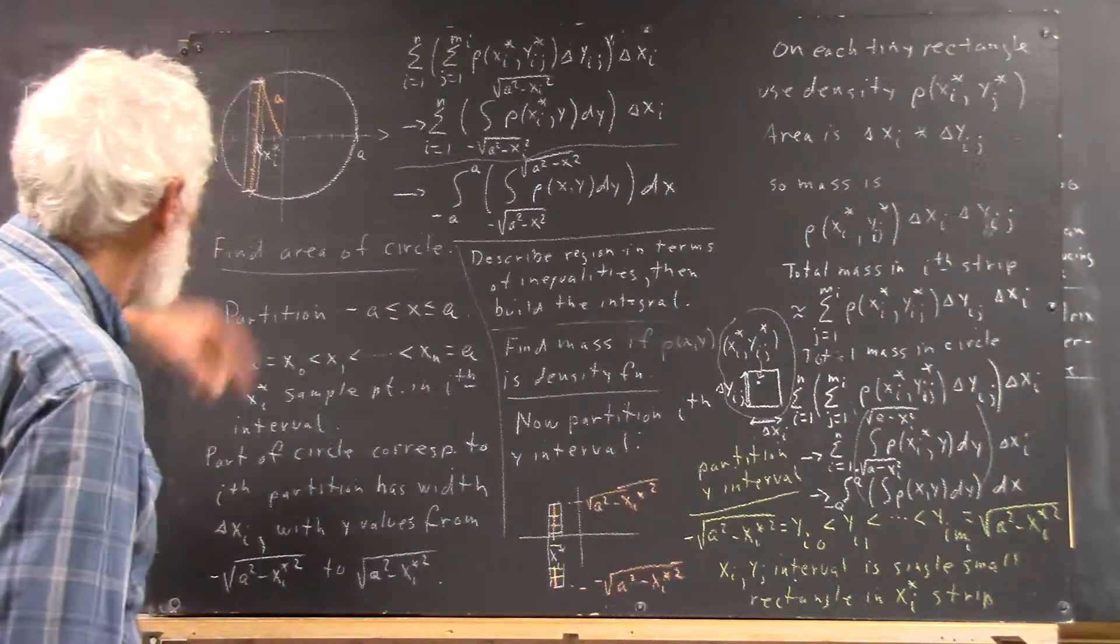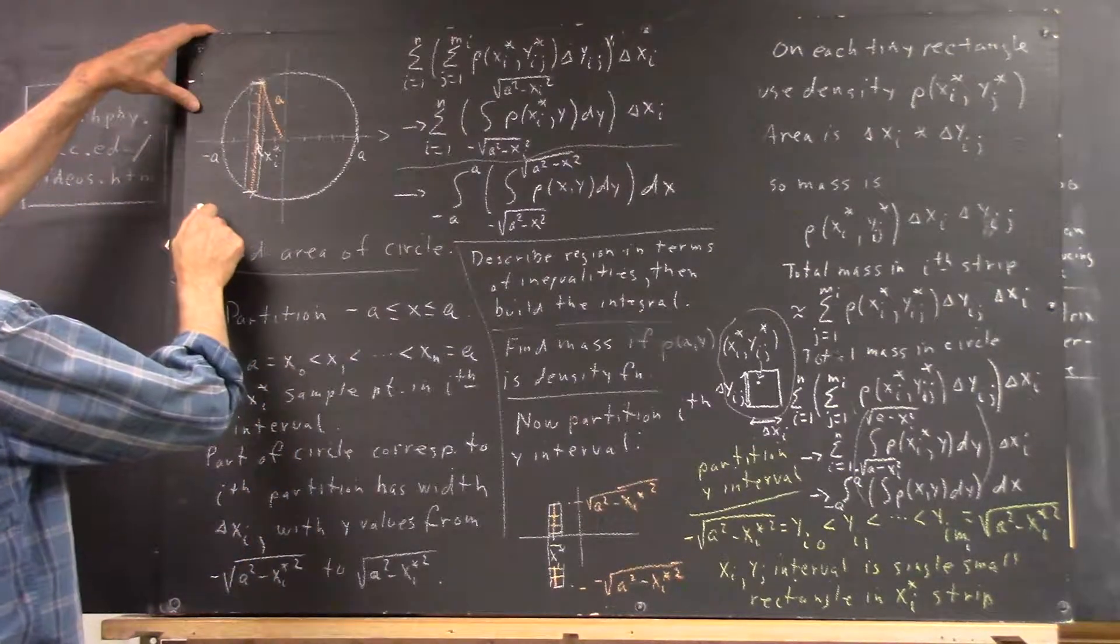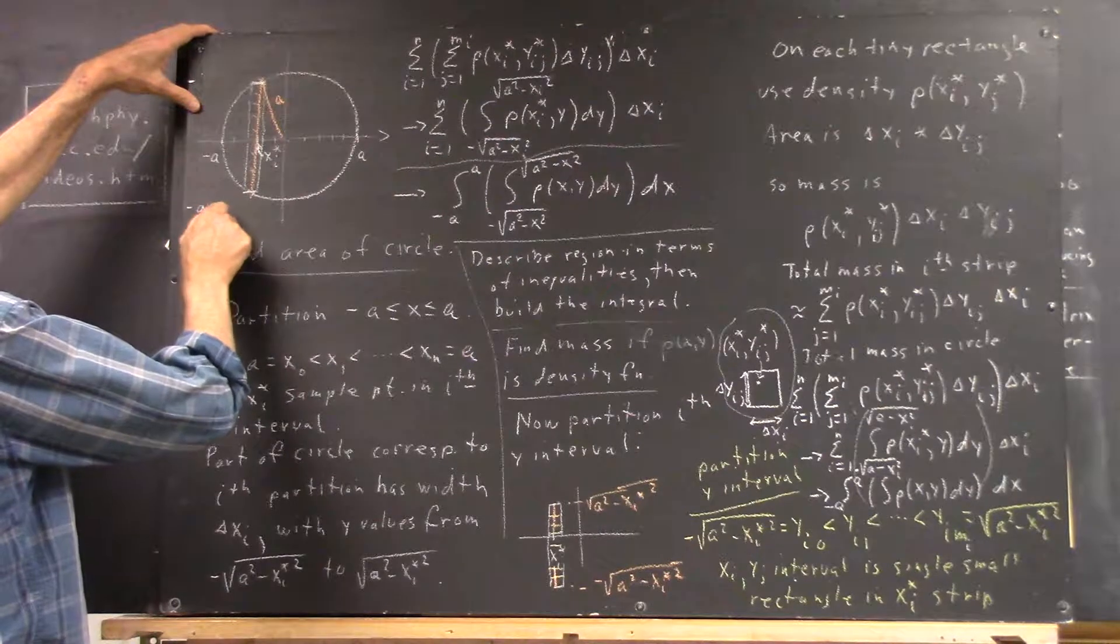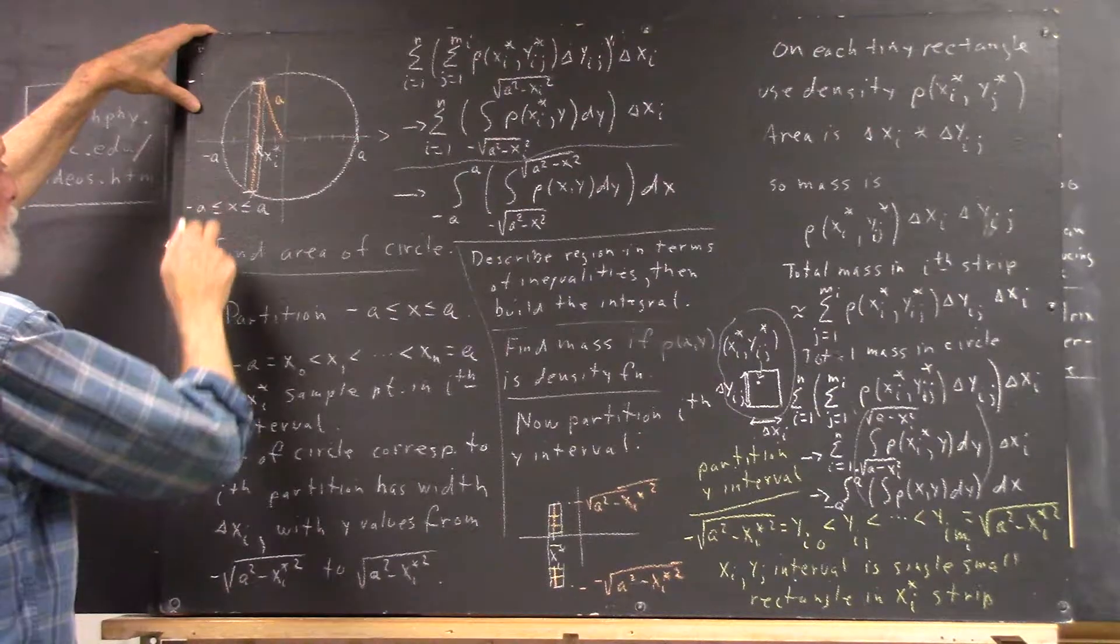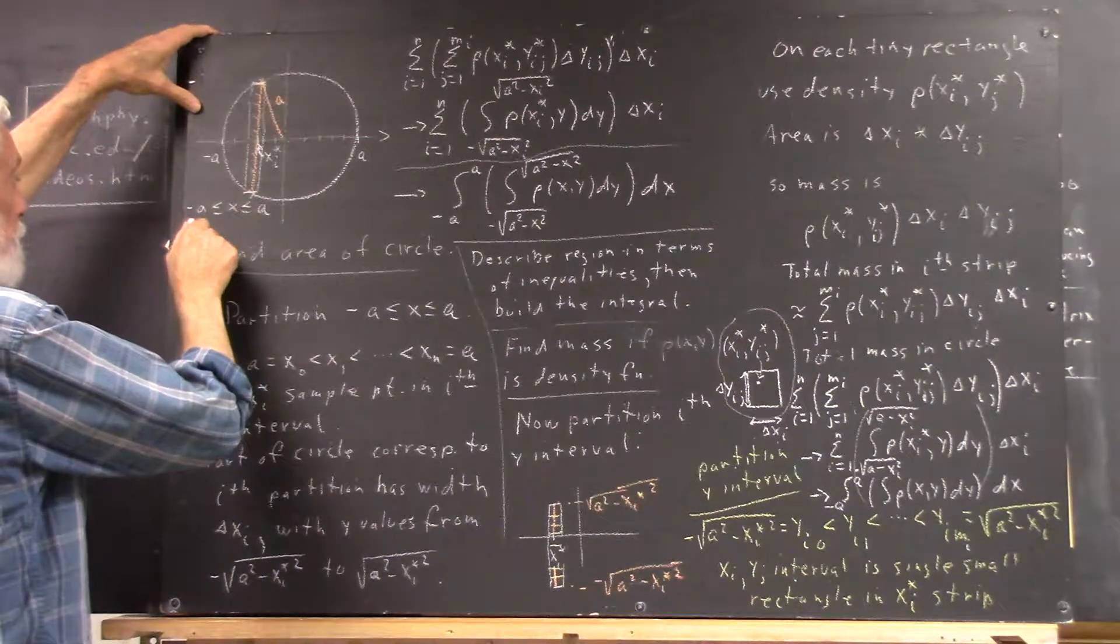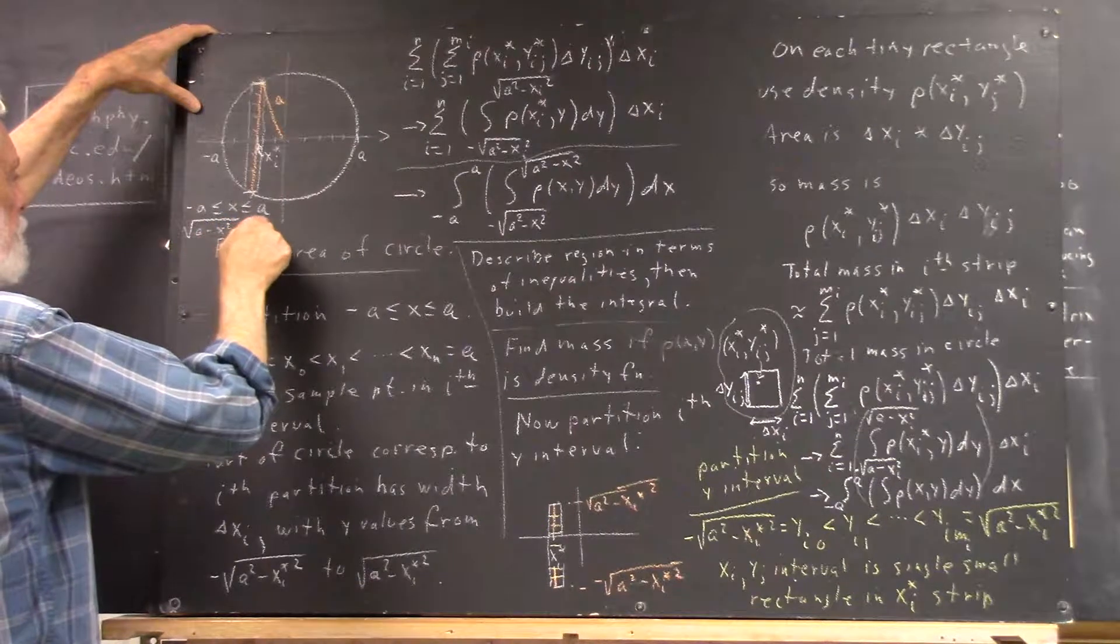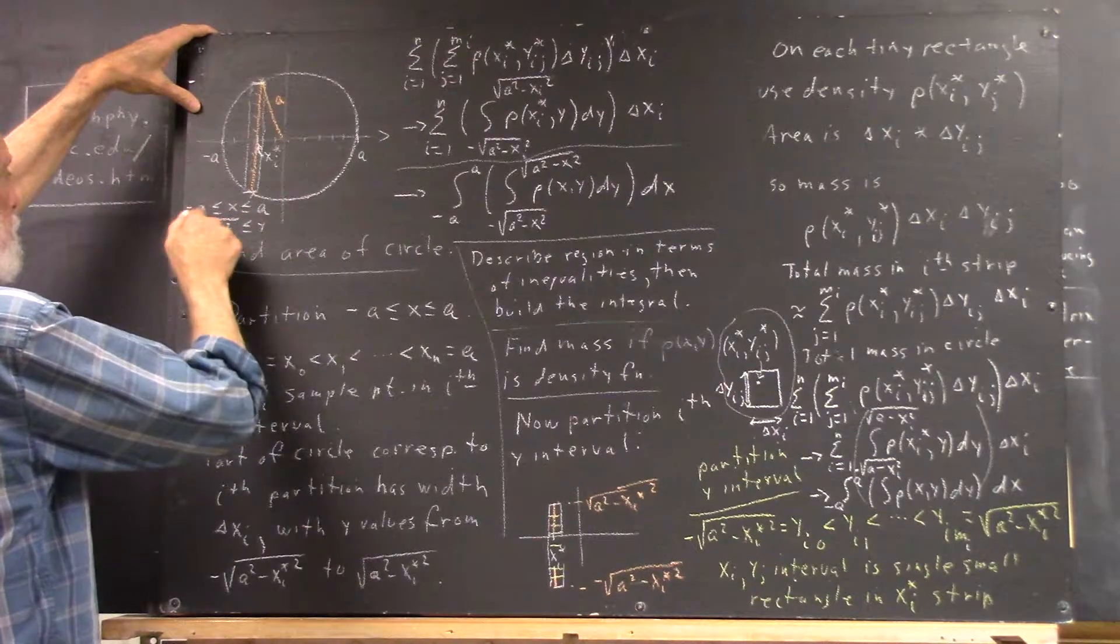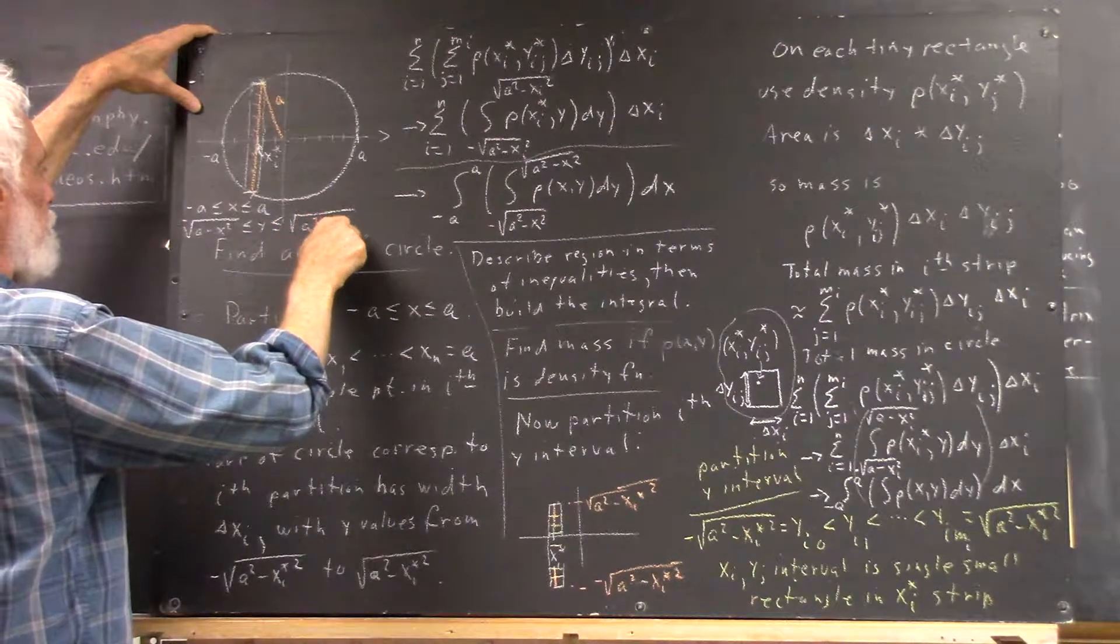To describe this region in terms of inequalities, we simply say that negative a is less or equal to x is less or equal to a, and for any x, negative square root of a squared minus x squared is less or equal to y is less or equal to the square root of a squared minus x squared.